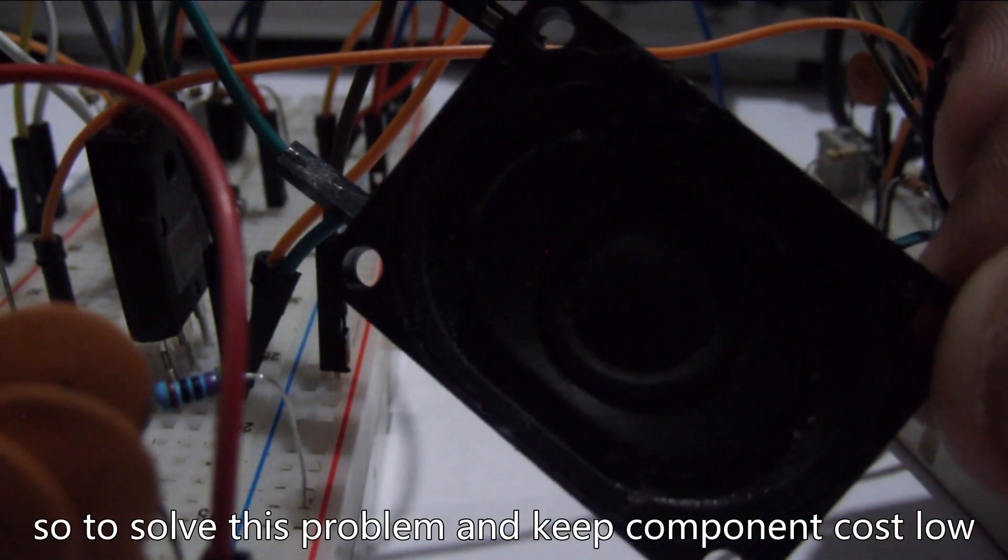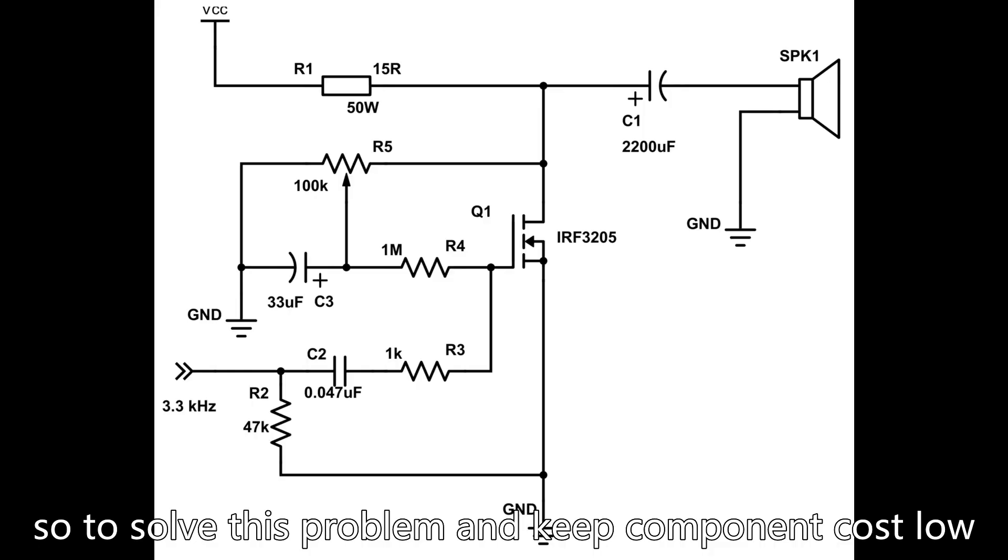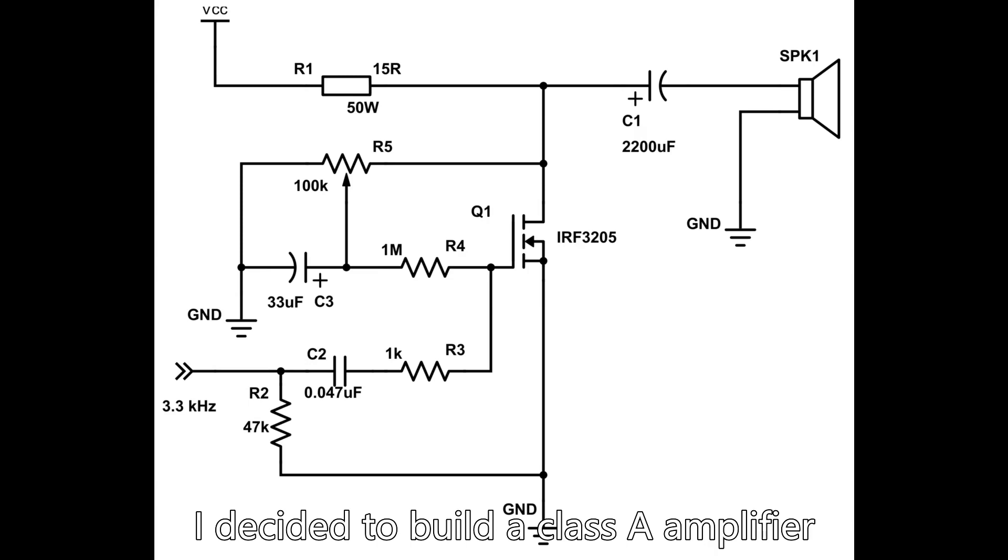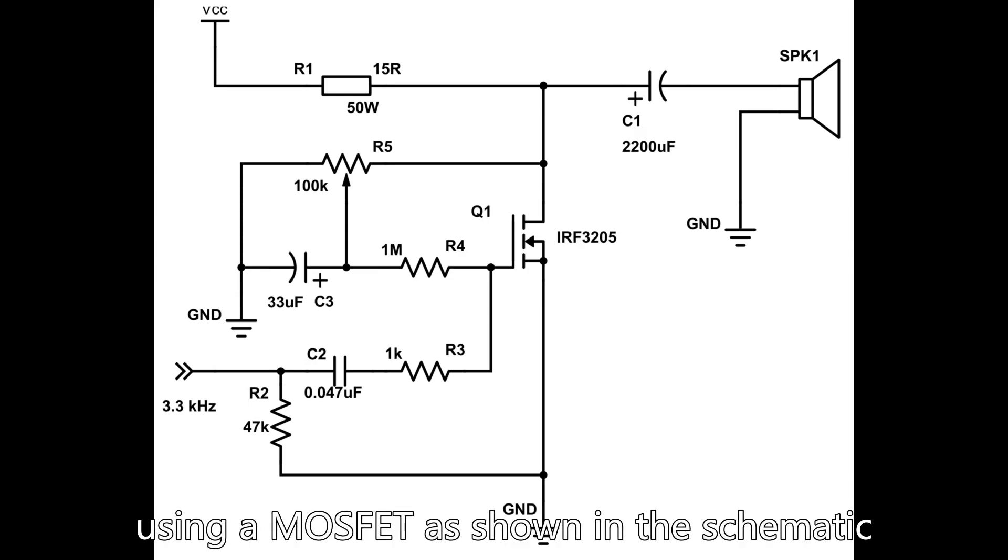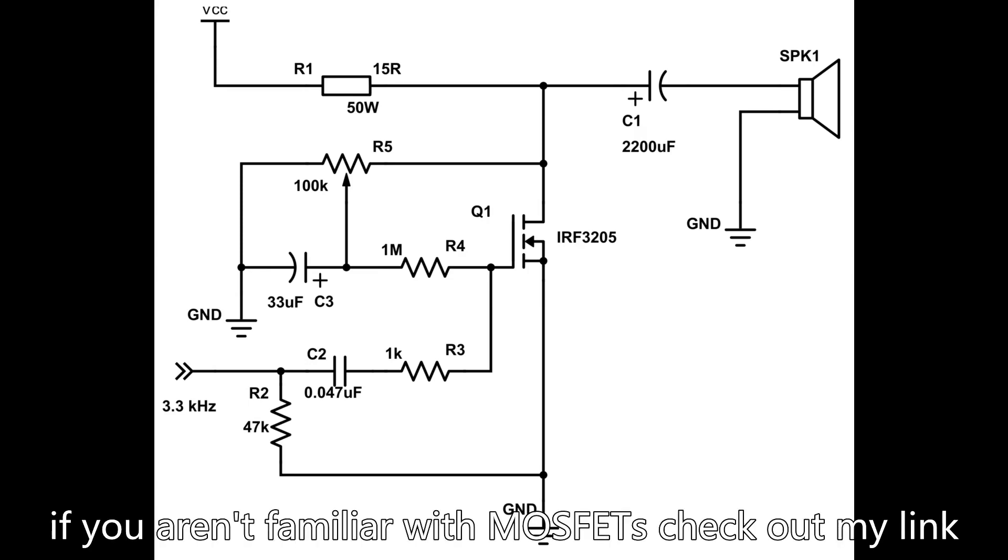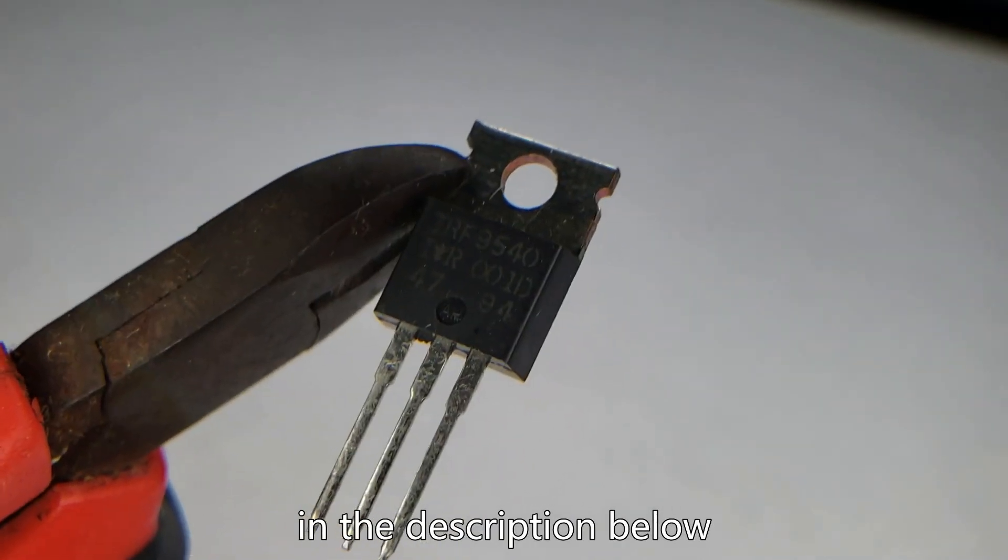So to solve this problem and keep component cost low I decided to build a class D amplifier using MOSFETs as shown in the schematic. If you are unfamiliar with MOSFETs check out my link in description below.